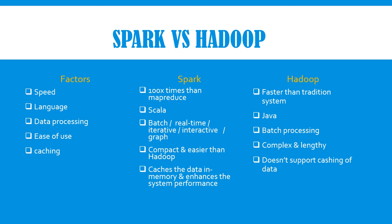Now let's discuss major differences between Spark and Hadoop — why we are moving to Spark. The first factor is speed: Hadoop is faster than traditional systems only, but Spark is 100x faster than MapReduce. On language perspective, Hadoop uses Java which is lengthy and complex, but Spark uses Scala which is very user-friendly. For data processing, Hadoop only processes batch data, but Spark processes batch, real-time, iterative, interactive, graph, and many more types — making it a much more feasible option compared to Hadoop.